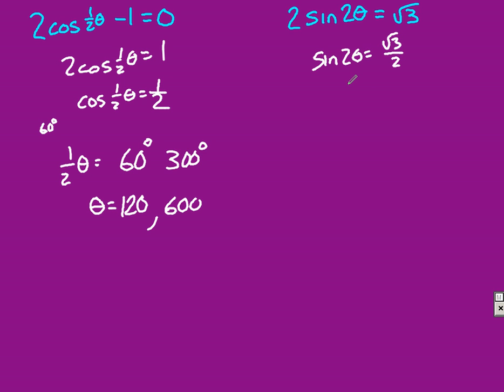Sine equals root 3 over 2 at 60 degrees. So we should be looking for where sine is positive, which is quadrant 1, quadrant 2. My answer in center is 60 and 120, and that's what equals 2 theta.